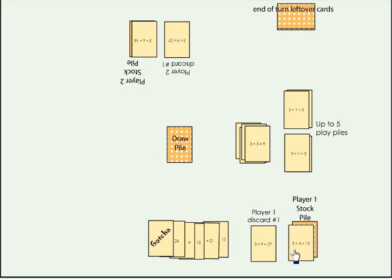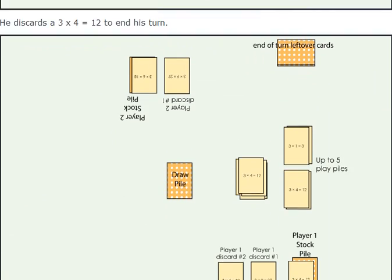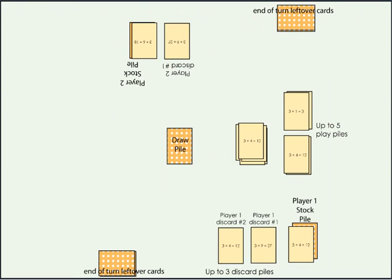Player one can use his gotcha card as a three times two equals six and then play his three times three equals nine and use the top stockpile card again. Then he flips over the next stockpile card. It is also a three times four equals 12. That's not a good sign. We've got a lot of those and it's going to be hard to use. Then he discards the three times four equals 12 that he has in his hand to end his turn.